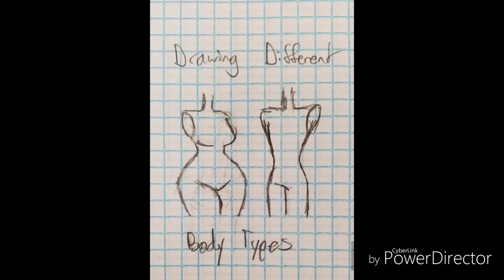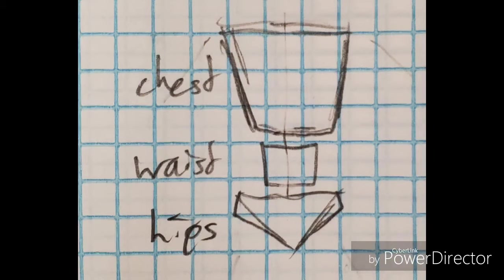Hello people of the internet, Queen Spinel here. Today I'll be giving you some tips on how to draw different body types. I like to break the torso up into three main parts: the chest, the waist, and the hips. By changing the sizes of these parts in relation to each other, you can make a variety of different body types for male and female bodies.